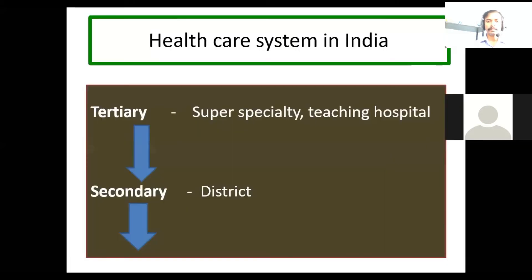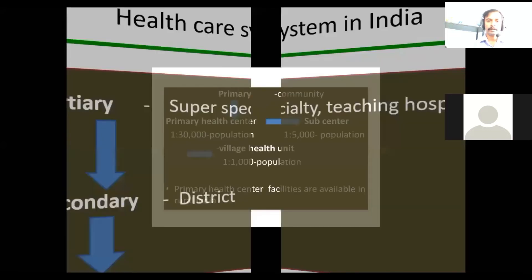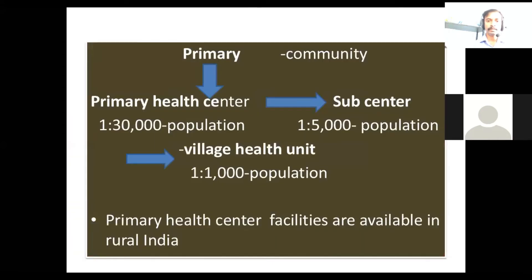Health care system in India. To clearly understand the availability of health care facilities in rural areas, we need to know about the health care system. It is a three-tier system: primary, secondary, and tertiary. Tertiary consists of super-specialty and teaching hospitals, secondary includes district hospitals.